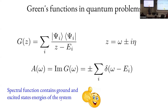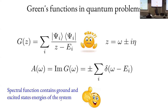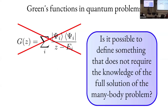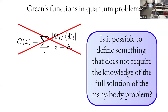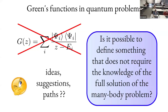This is why we want to use the spectral function. Since G contains poles at the energies, the spectral function will have peaks exactly at those energies. If you plot the spectral function, you will see peaks at the energies of your system — in this case, the energies of your Hamiltonian. However, we still have to solve the many-body problem. The question is: is there another way to find G without solving for all the eigenstates?